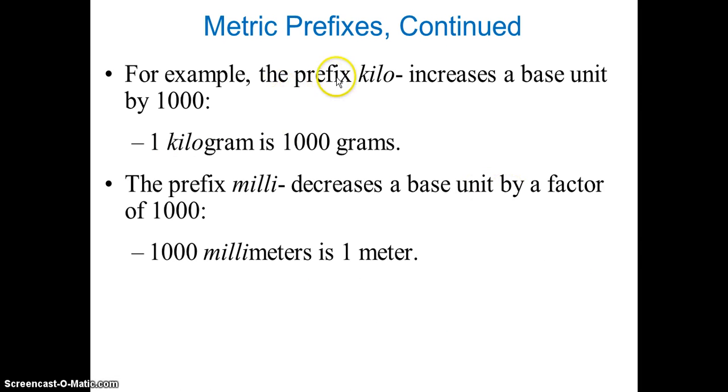For example, prefix kilo increases a base unit by 1000. One kilogram is 1000 grams. The prefix milli decreases a base unit by a factor of 1000, and there are 1000 millimeters in one meter.